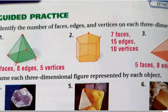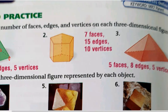For the vertices: in the top base we have one, two, three, four, five, and in the bottom base we also have five. So there are ten vertices in total. Moving to question three, we have one base on the bottom.